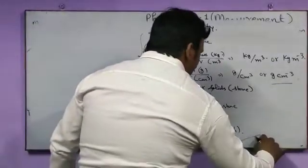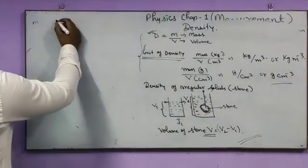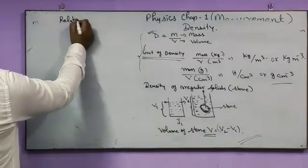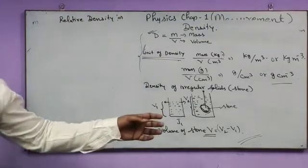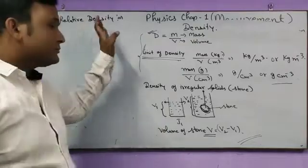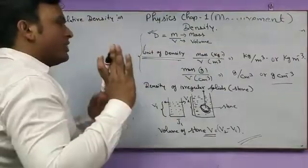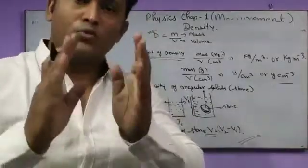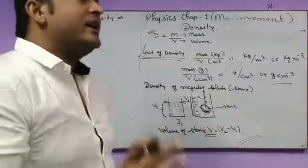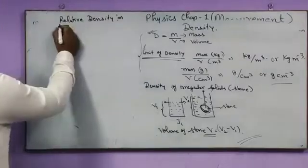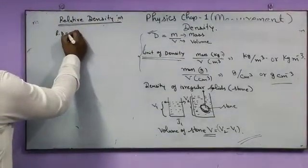This was about density. Next comes relative density. This must be new for you. Relative density is basically when we compare the density of substance with that of water. We get a number and that number is termed as relative density. In the formula we can write that relative density equals density of substance compared with density of water.